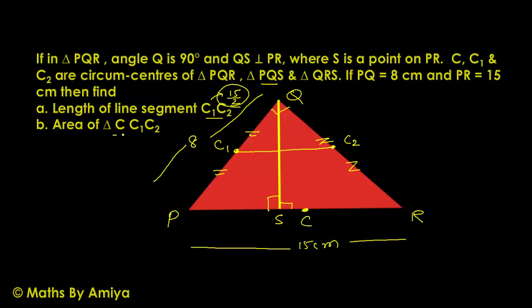Now area of triangle C C1 C2. This is the midpoint triangle. If we find the area of complete triangle PQR, then the area of the required triangle is one-fourth of the area of triangle PQR. We have a right angle triangle. This one is 8 cm, this is 15 cm. We can say this is root of 15 square minus 8 square, that is root of 225 minus 64, which becomes root 161 cm.